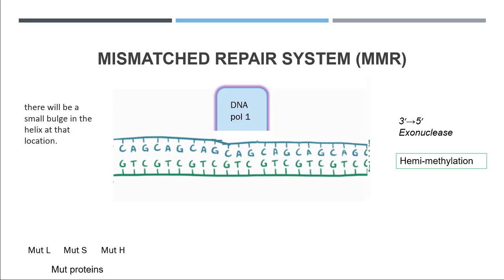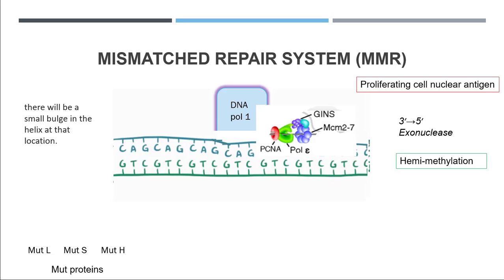For the eukaryotic repair system, the MutS proteins attach to a circle called PCNA — proliferating cell nuclear antigen — which is attached with either polymerase epsilon or polymerase delta, depending on whether the strand is the lagging or leading strand. This protein attaches with PCNA and the polymerase refills the gap by attaching the correct nucleotide at that position.